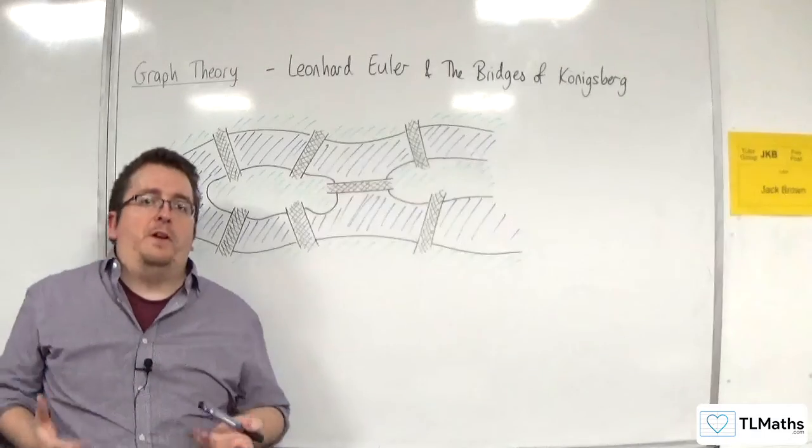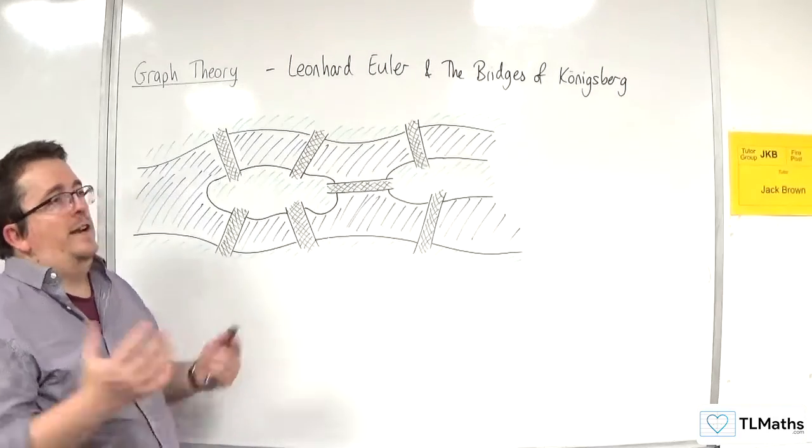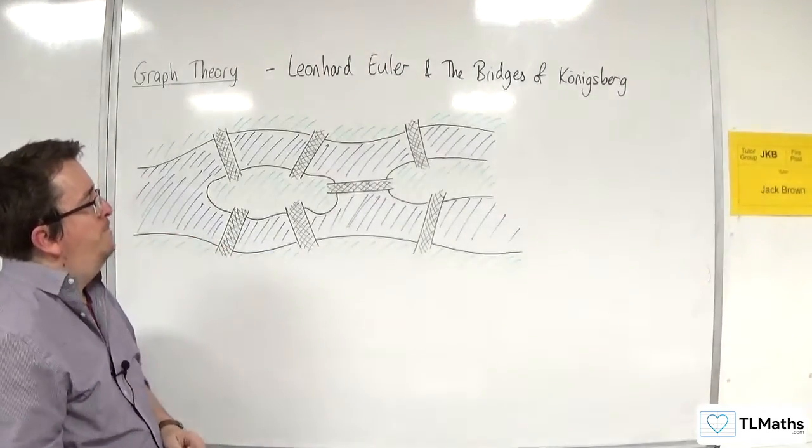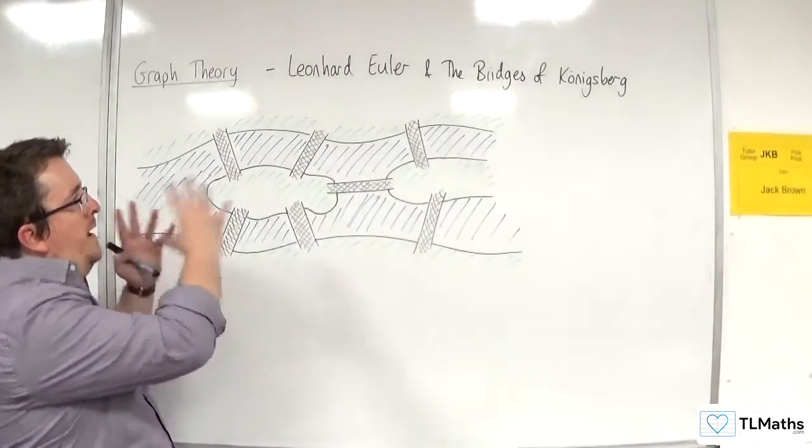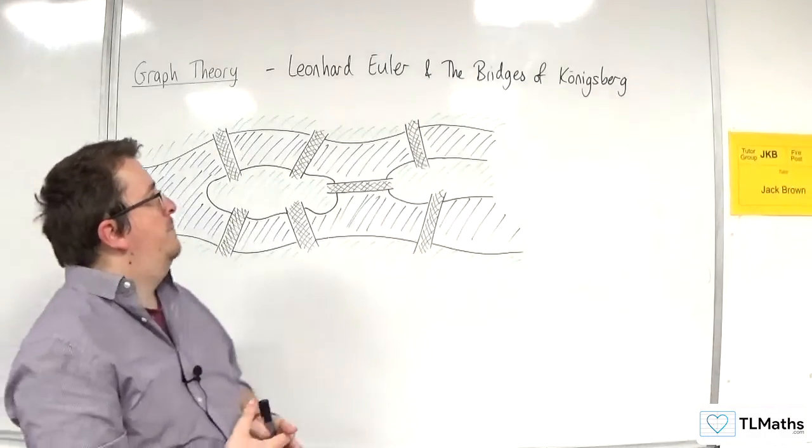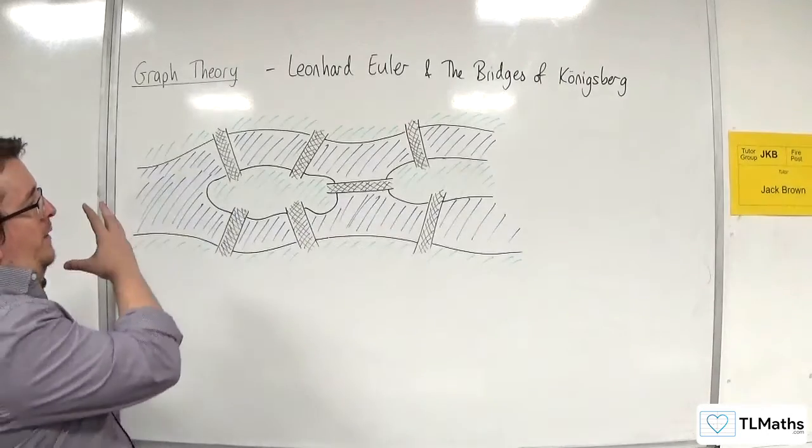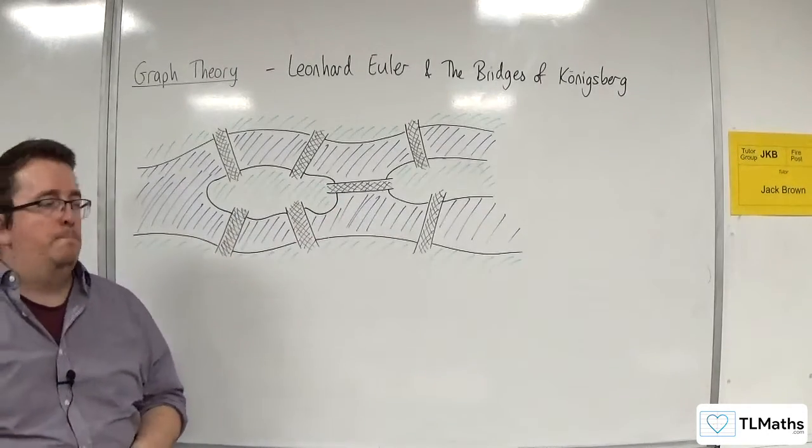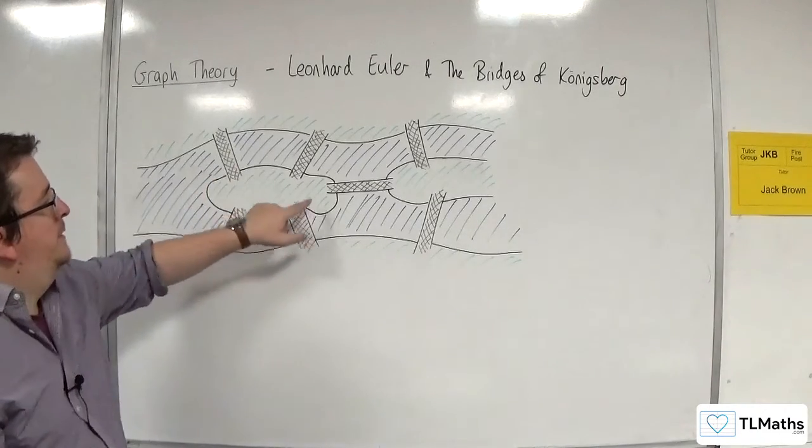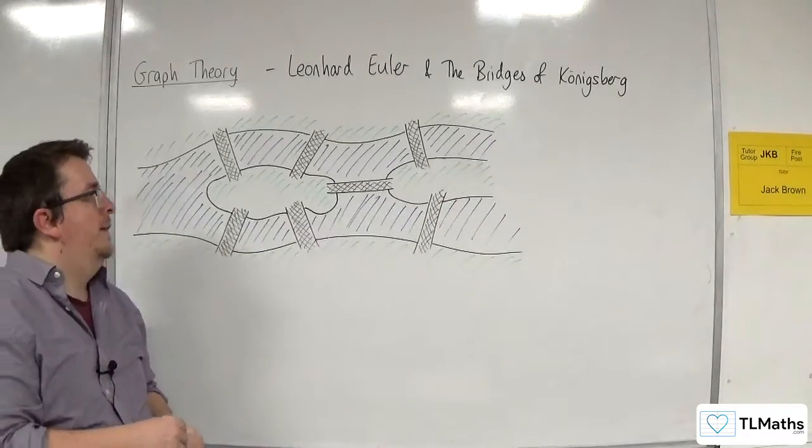Now the bridges of Königsberg problem is really where it all stemmed from. So the legend goes that there was essentially a competition where in the city of Königsberg, and you can look it up on Wikipedia and see where it was and what happened to it, the city of Königsberg has a river that is running through it. And there are these two land masses, there's this island here, and there's a separate bit of land here in the middle, and either side of the river is these other land masses.